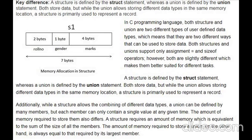The key difference is in memory allocation. A structure requires an amount of memory equivalent to the sum of the sizes of all its members, whereas the amount of memory required for a union is always equal to that required by the largest member — the one that occupies the highest number of bytes. Look at this diagram of unions.